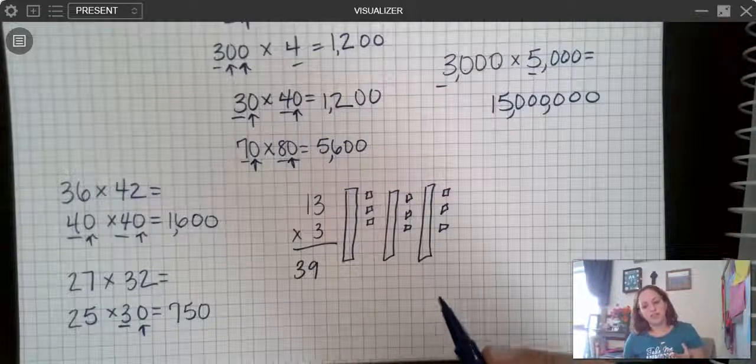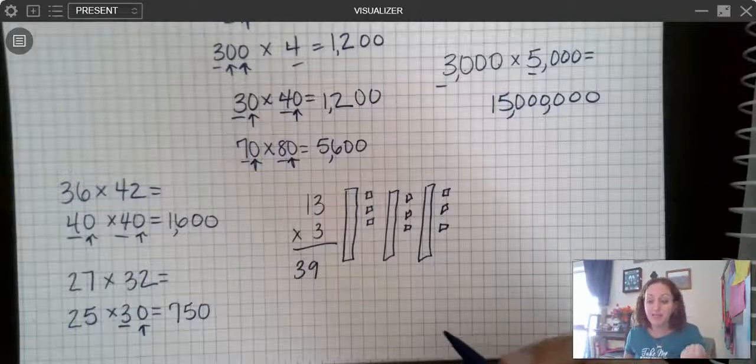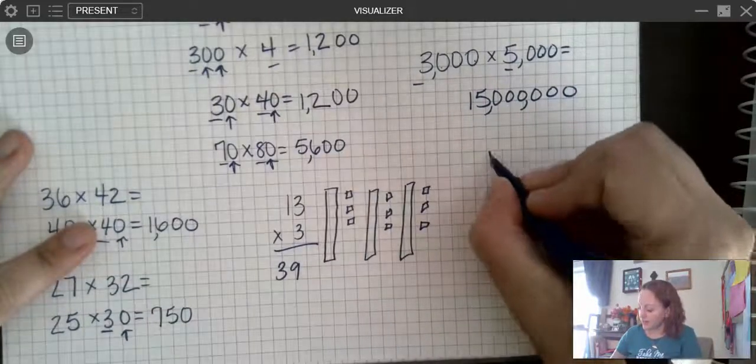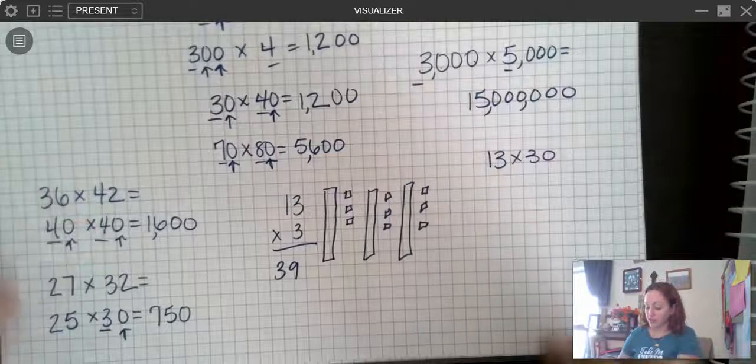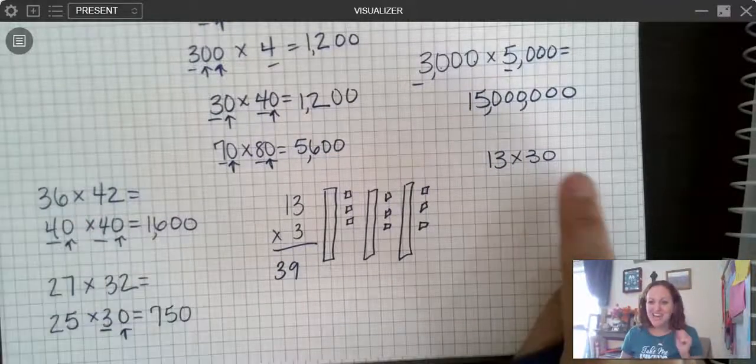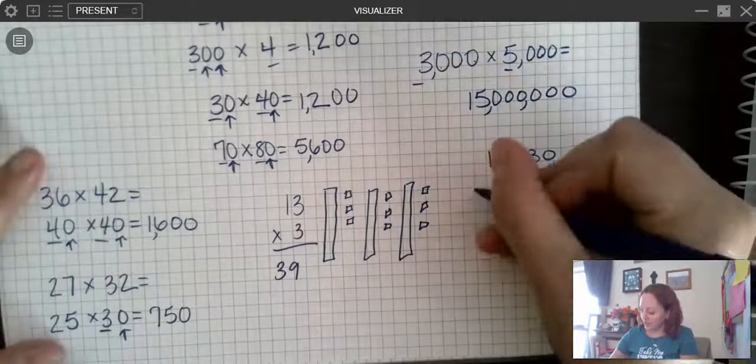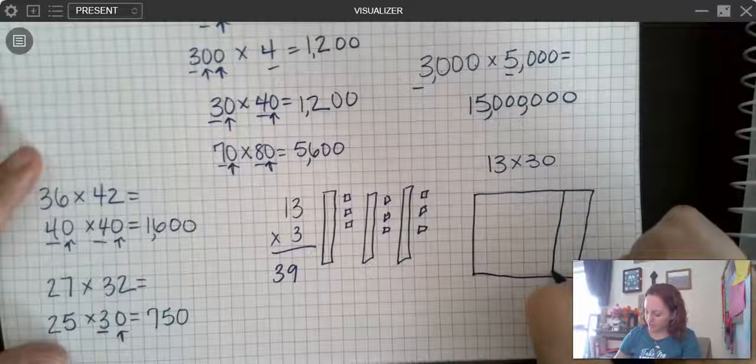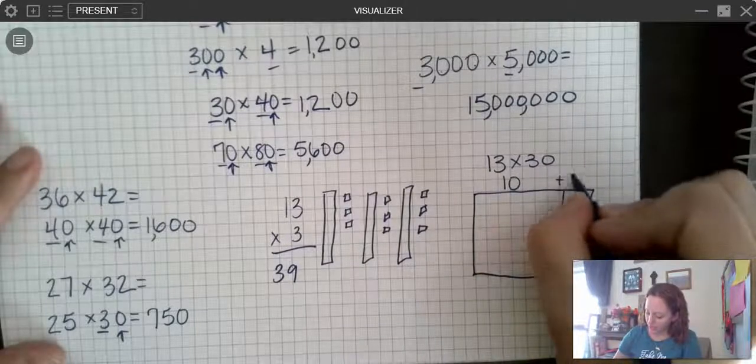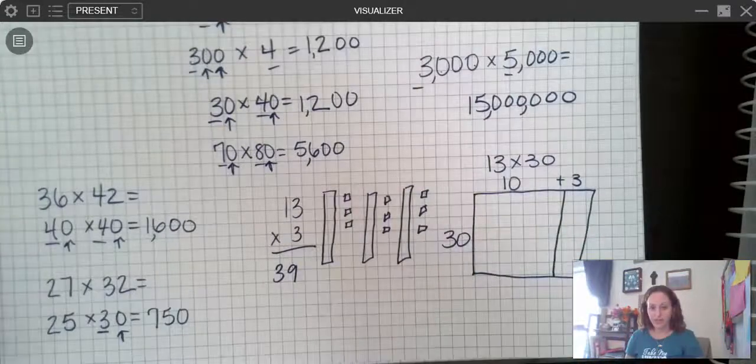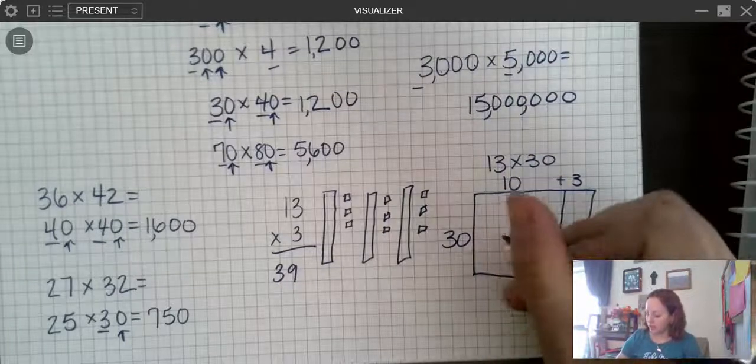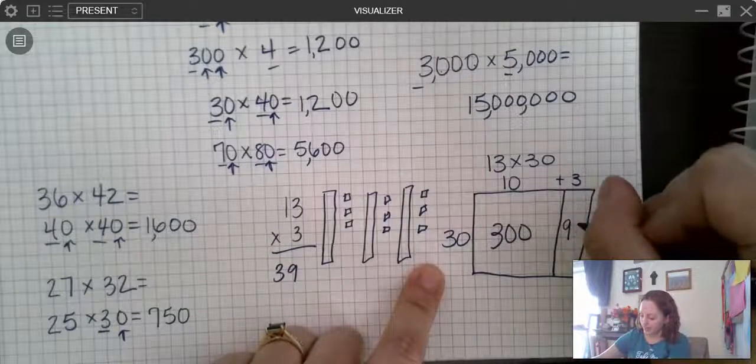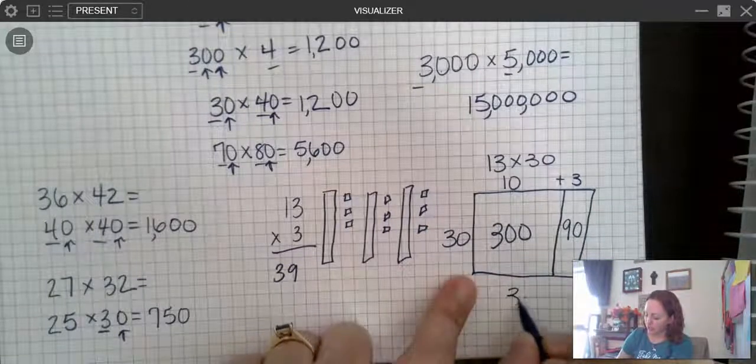But an easier way for us to represent that is going to be in what's called an area model. And we talked about area models in the last unit. So this is something that you've seen where we're drawing a box. So let's say I have 13 times 30. Well you should know right away, hold on, I just have to add a zero, it's 390. But what we could do is we could draw this area model where we have our tens and our ones. So we're going to split this into 10 plus 3 and we're going to keep this as 30. And then I know 10 times 30 is 300 and 30 times 3, well 3 times 3 is 9, and then I add my zero and I add those together and I get 390.